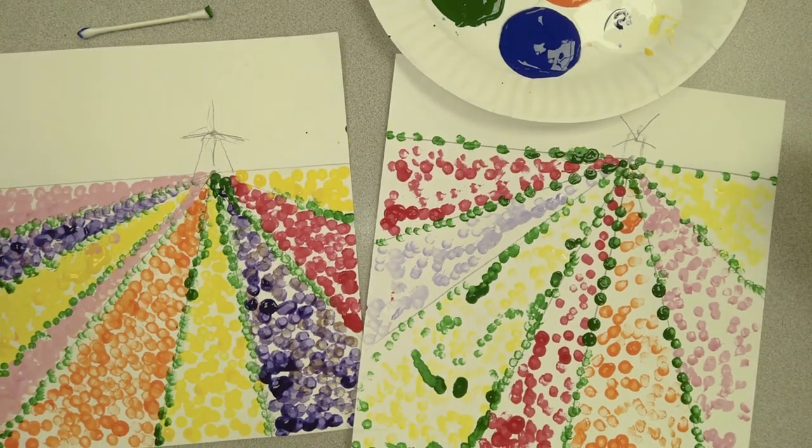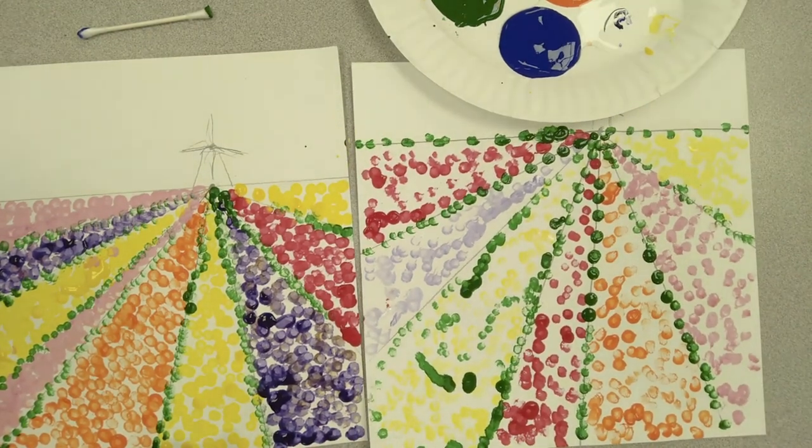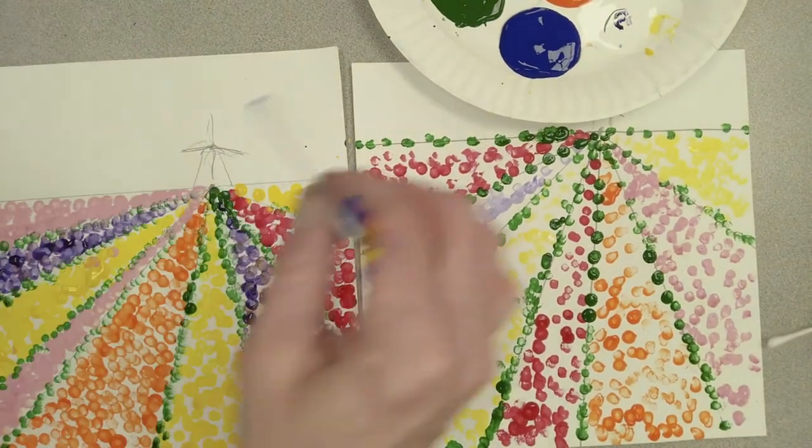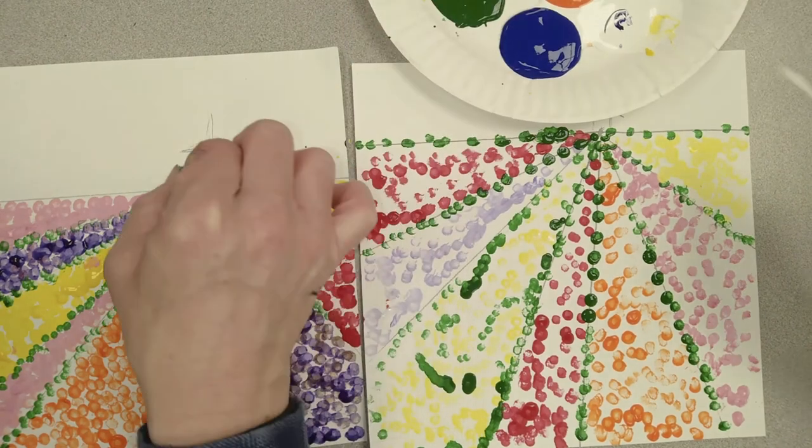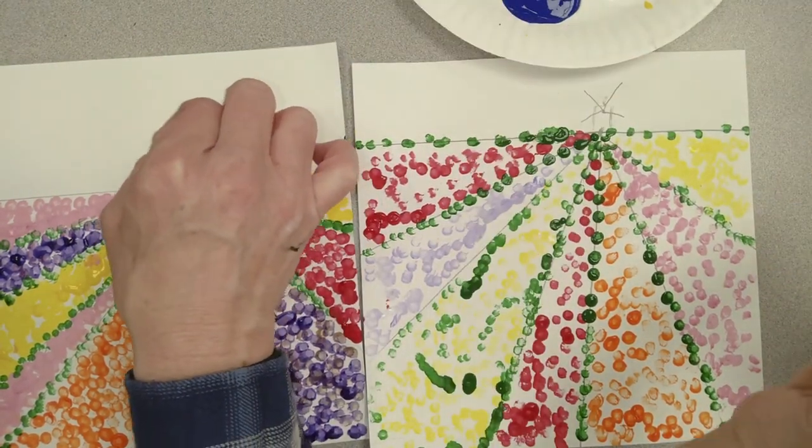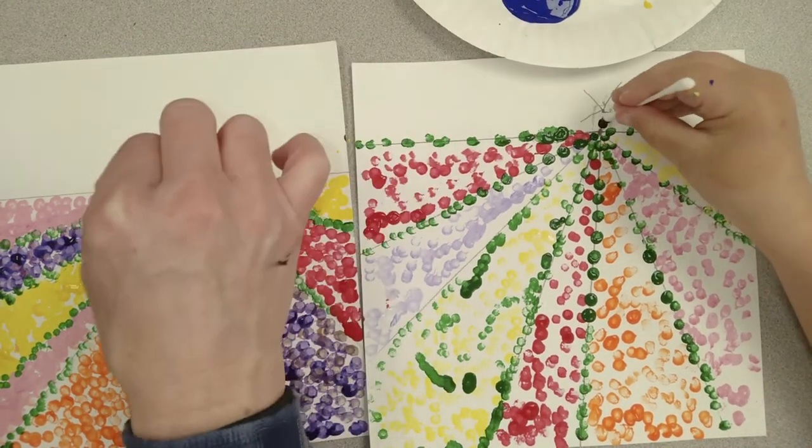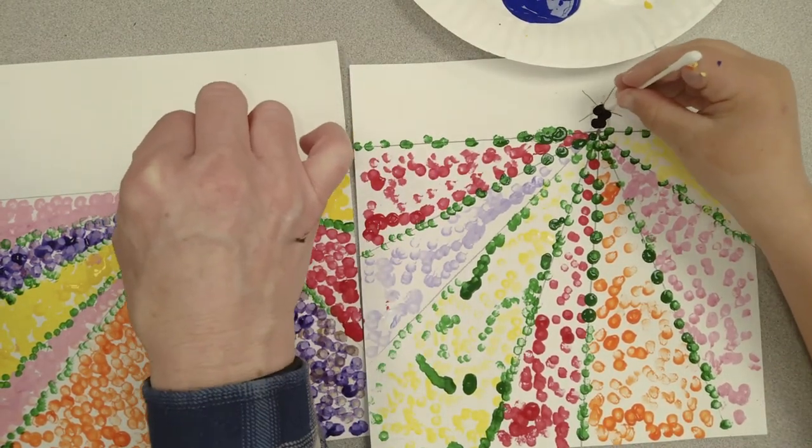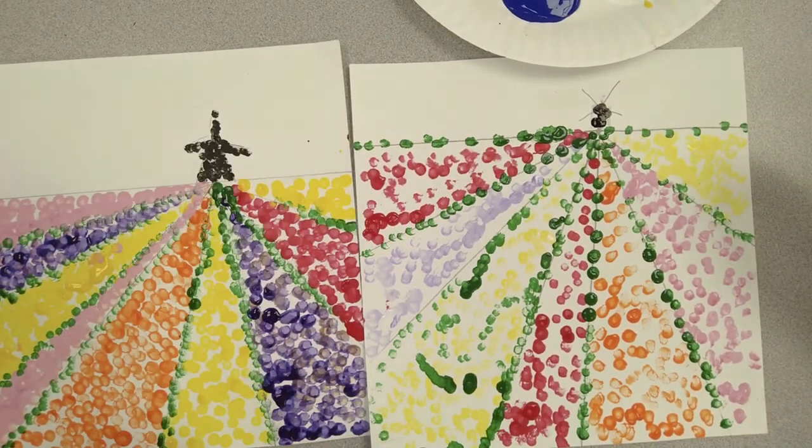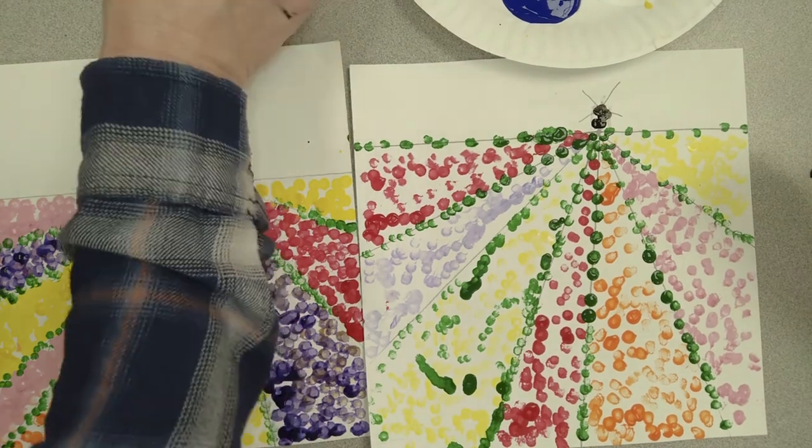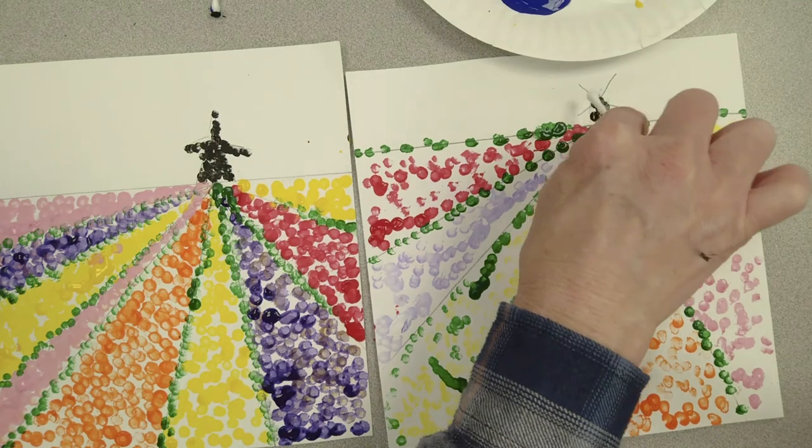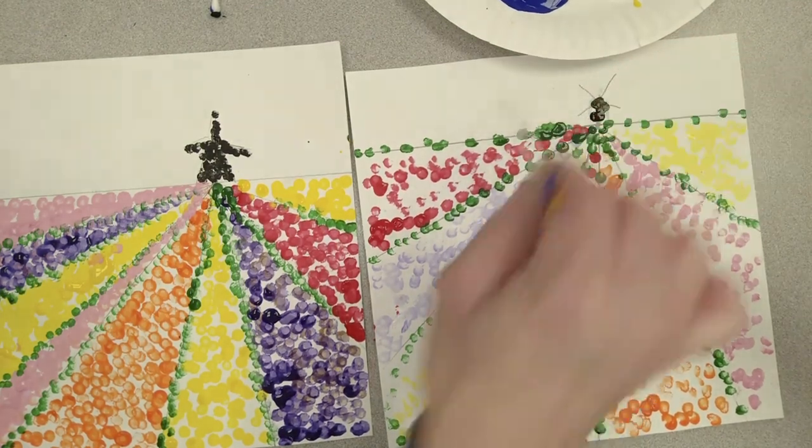Now that you're done with the tulip fields, it's time to do the windmill and the sky. So you can get another Q-tip, and we're going to get a little bit of black, and the black is going to be for the windmill. We're just going to do a little bit of black along the windmill, those four lines in the windmill part.